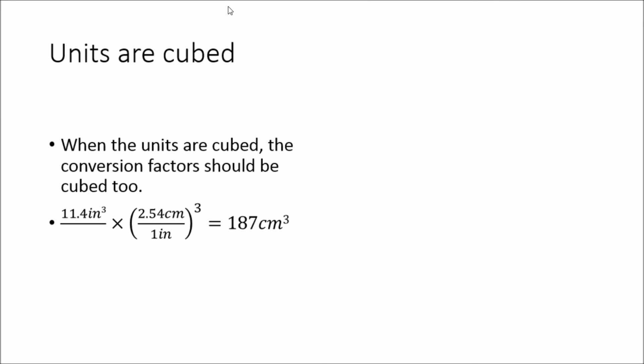See, when we're doing this kind of conversion, our units are cubed, and when the units are cubed, the conversion factors will need to be cubed as well. So, another way to write this would be 11.4 cubic inches multiplied by 2.54 centimeters per inch cubed, and that will be equal to 187 cubic centimeters.